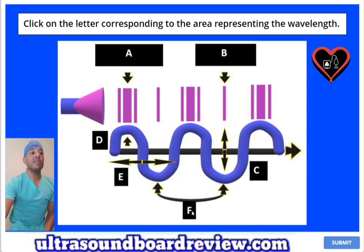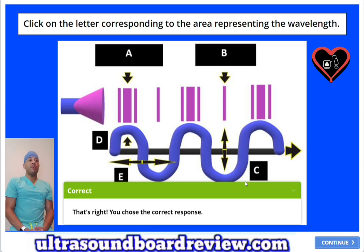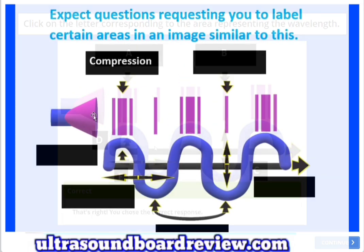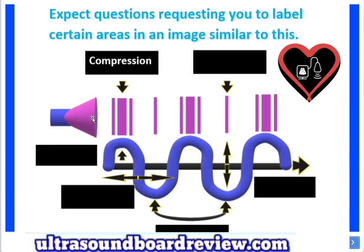The answer is the letter F. What this diagram demonstrates is you can see that this kind of mimics a transducer. This is the beam. Here's the sound wave. These lines here represent areas of the sound beam that are compressed and areas that are not compressed.